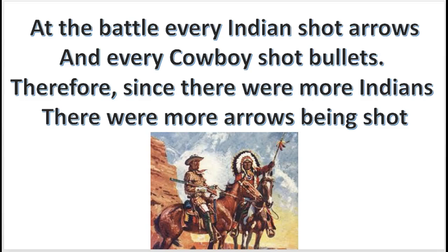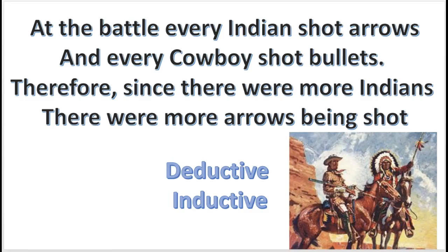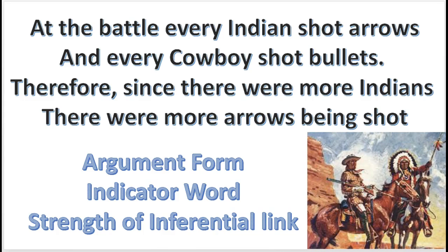Here's another practice problem. Listen to this argument: At the battle, every Indian shot arrows and every cowboy shot bullets. Therefore, since there were more Indians, there were more arrows being shot. How is this argument best interpreted? It's a deductive argument. What are your reasons? The strength of the inferential link — the argument has no indicator words and no form we've discussed so far, but the conclusion does follow necessarily from the premise.